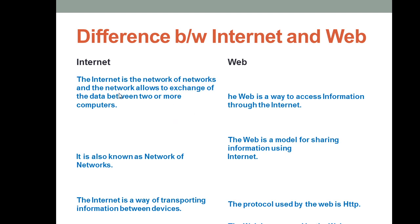That means the internet is the basic concept — it is the main resource with the help of which you access information. The web is what allows you to access or exchange data and information. The internet is also known as a network of networks, and the web is a model for sharing information by using the internet.